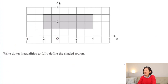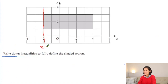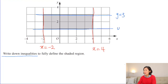Next question: look at the graph and write all the inequalities that define the shaded region. To solve this, find the equations first. From the graph we can identify four lines: x = minus 2, x = 4, y = 3, and y = 1.